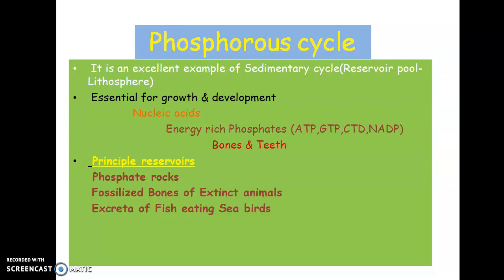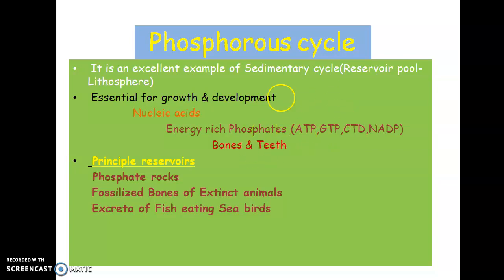What is the importance of phosphorus in our day-to-day life? Phosphorus is very important for our growth and development. The backbone of nucleic acids — DNA and RNA — is composed of sugar and phosphate, so we need phosphorus for that. Phosphorus is also a component of energy molecules like ATP, GTP, CTP, and NADP, which are energy assimilatory compounds essential for all metabolic activities.